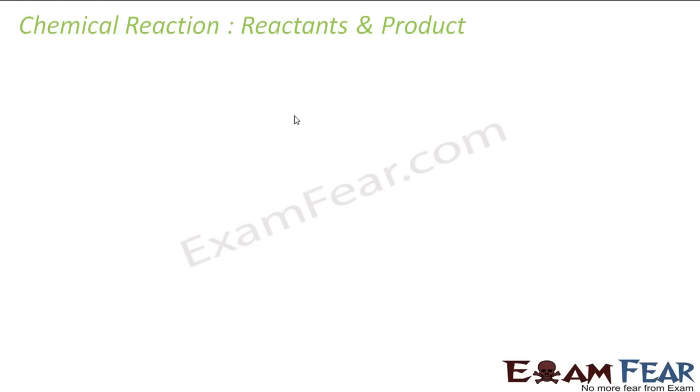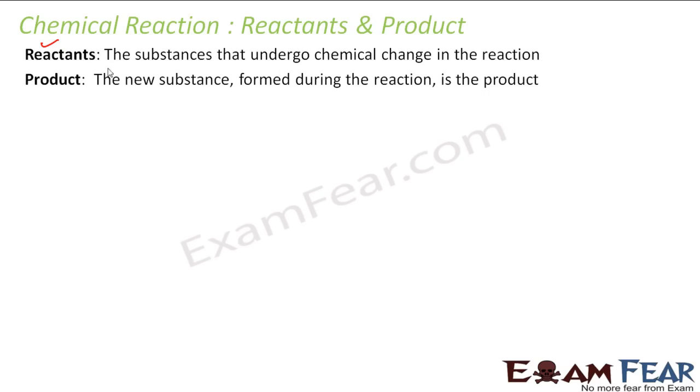So, chemical reaction typically has reactants and products. For example, the reactant is nothing but the substance that undergoes change. And product is nothing but the new substance that is formed. For example, in this case, my magnesium and oxygen is something which is undergoing change. So, they are reactants. Now, magnesium oxide is the final output. So, this guy is a product. And they are separated by a line.